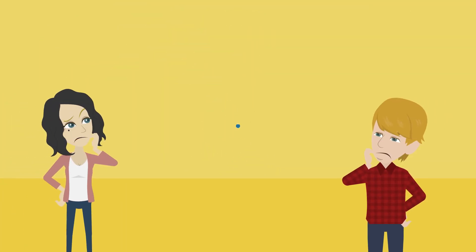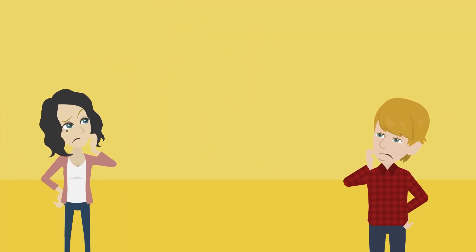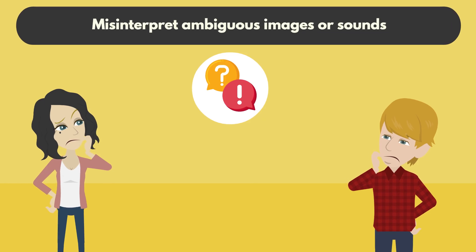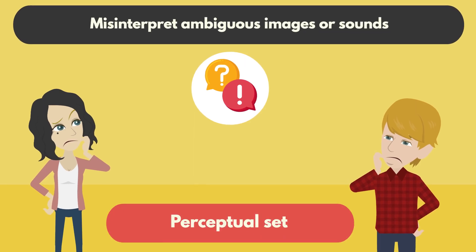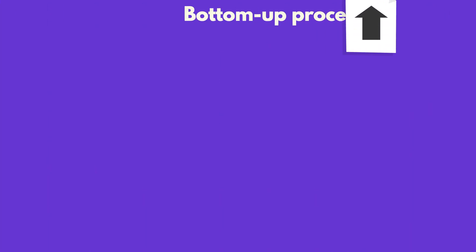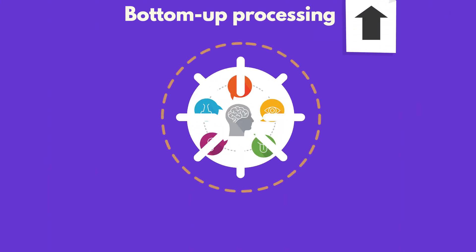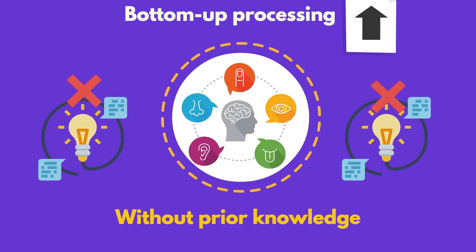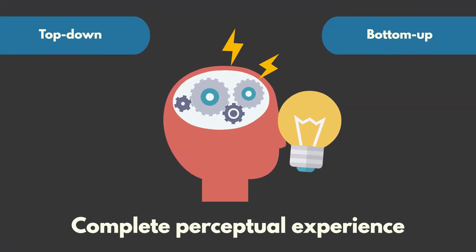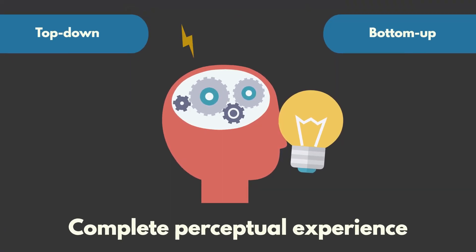For example, our expectations can cause us to misinterpret ambiguous images or sounds, a phenomenon called perceptual set. In contrast, bottom-up processing involves perception driven solely by sensory input without prior knowledge. Both top-down and bottom-up processing interact to form our complete perceptual experience.